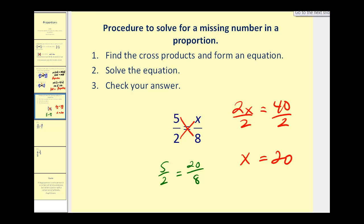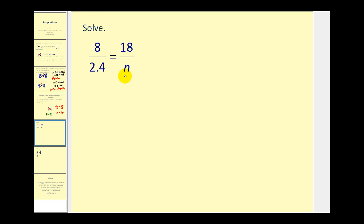Let's go ahead and do a couple more of these. We have a proportion, therefore the cross products must be equal, which means 8 times n, or 8n, must equal 2.4 times 18. So we'd have 8n equals 43.2.